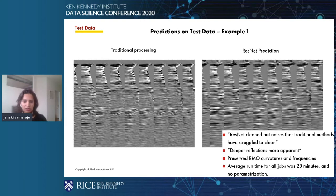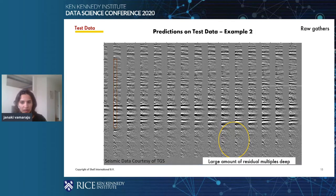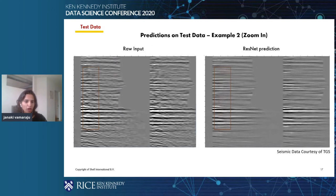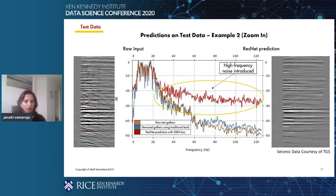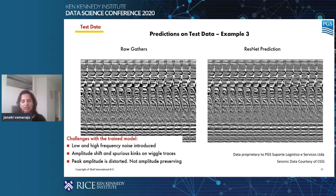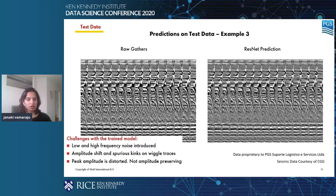But everything doesn't always look this promising. From a different survey, you can see that there's a large amount of residual multiples in the deeper parts. The ResNet prediction shows what can be expected from training with labels created from Radon Transform. They look okay from a distance, but if you perform a frequency analysis, you can see that with SSIM loss, high-frequency noise is introduced. The challenges with the current trained model include: low and high-frequency noise is introduced, amplitude shifts and spurious kinks on wiggle traces can be seen, the peak amplitude is sometimes distorted, and it's not amplitude-preserving.